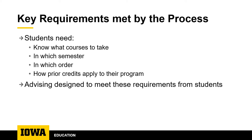For example, students have the need to know what courses to take, in which semester, in what order, and how transfer credits apply to meeting their program of study. Our advising work process is designed to meet those requirements from students by giving them the information and support they need to take the correct courses in the correct order to graduate on time.